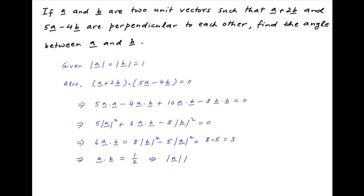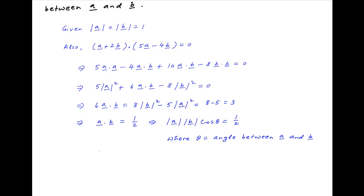Now, a dot b is equal to the absolute value of vector a times the absolute value of vector b times cos theta, where theta is the angle between vectors a and b. Since the absolute values of vectors a and b is equal to 1, therefore cos theta is equal to one half. Therefore, theta, the angle between vectors a and b, is equal to 60 degrees, which is the required answer.